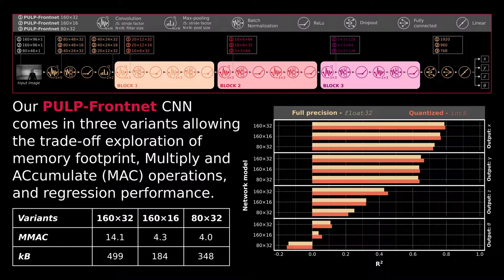PULP FrontNet comes in three variants, allowing for trade-off exploration on the memory footprint, the number of multiply and accumulate operations, and regression performance.